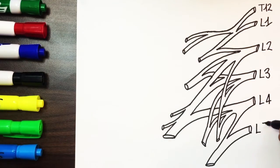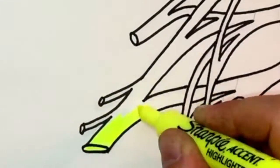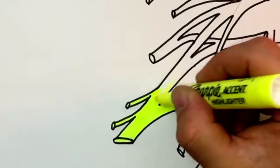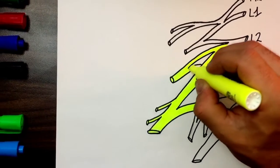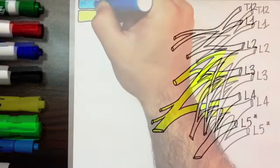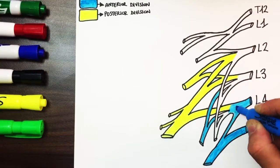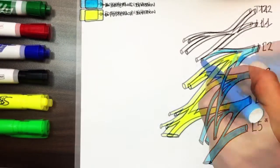All the branches of the lumbar plexus emerge lateral to it, except for the genitofemoral nerve which arises anteriorly and the obturator nerve which arises medially. The diagram I'm drawing also gives you a visual reference regarding the anterior division labeled in cyan and the posterior division labeled in yellow.